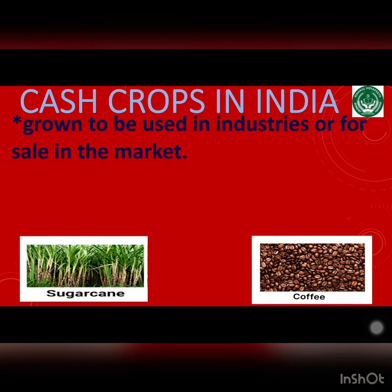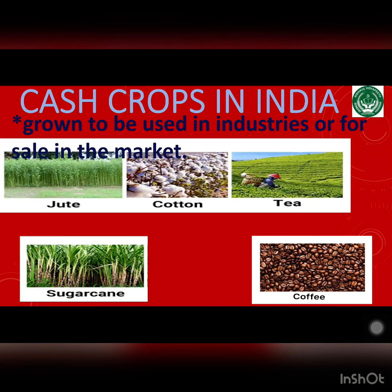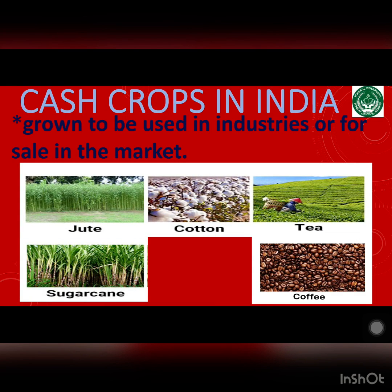The crops which are grown to be used in industries or for sale in the market are called cash crops. The main cash crops are sugarcane, jute, cotton, tea and coffee. Sugarcane is used to make jaggery and sugar. Jute is used to make bags and carpets. Cotton is used to make cloth. Tea and coffee are popular drinks.